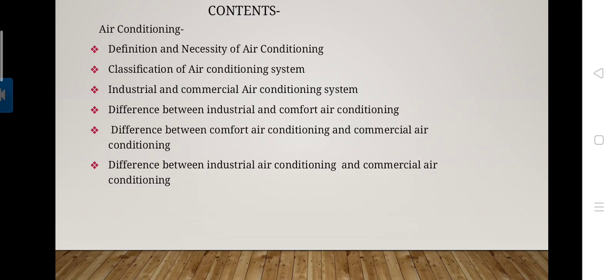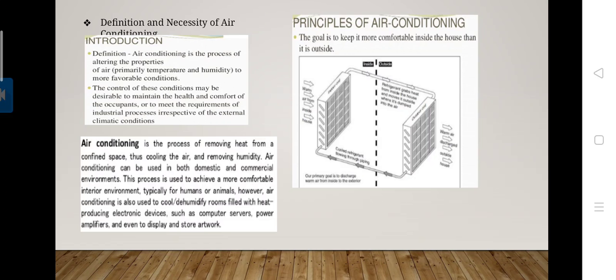Also the difference between industrial air conditioning and commercial air conditioning. So we start from the introductory part. Air conditioning system is the process of removing heat from a confined space, thus cooling the air and removing humidity. Air conditioning can be used in both domestic and commercial environments and is used to achieve a more comfortable interior environment, typically for humans or animals. However, air conditioning is also used to cool and dehumidify rooms filled with heat-producing electronic devices such as computer servers and power amplifiers.